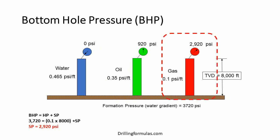In the third case, bottom hole pressure is still based on the water gradient, but the fluid column is gas at 0.1 psi per foot, which is even lower density than water at 0.465 psi per foot. Therefore, in order to balance bottom hole pressure, we need a surface pressure of 2,920 psi. According to this example, surface pressure will compensate for the lack of hydrostatic pressure in order to balance formation pressure.